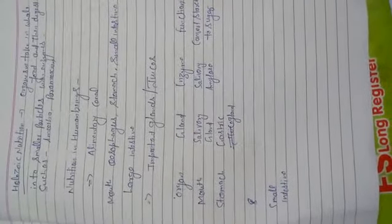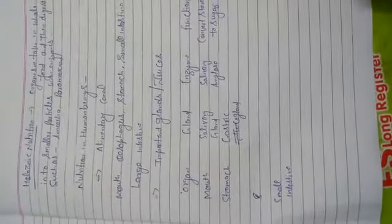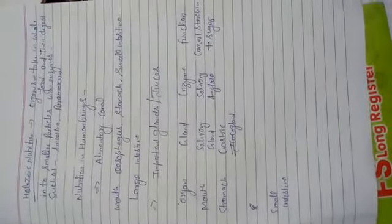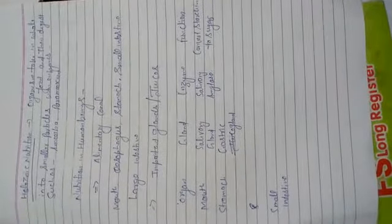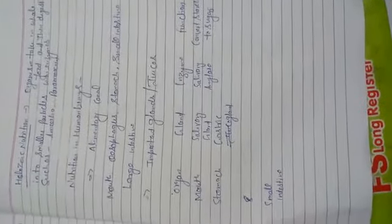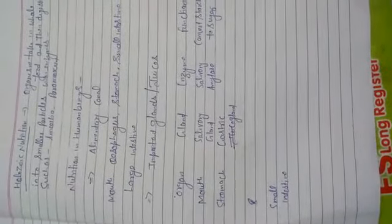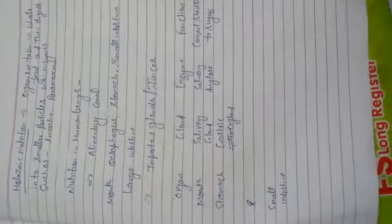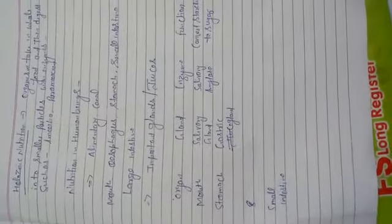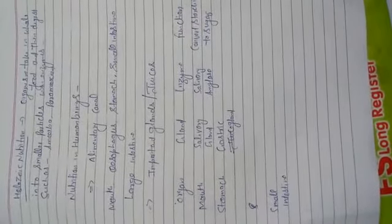Important glands and juices: in the mouth, salivary glands produce salivary amylase, which converts starch into sugar. In the stomach, gastric glands produce gastric juice, which further breaks food into smaller parts.